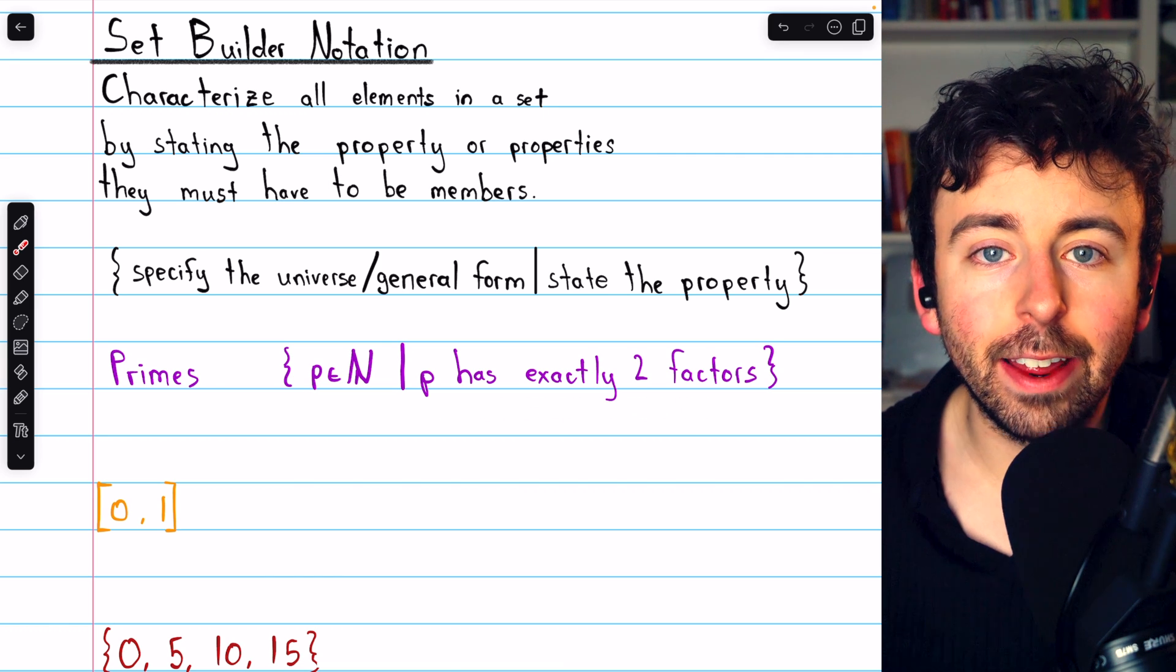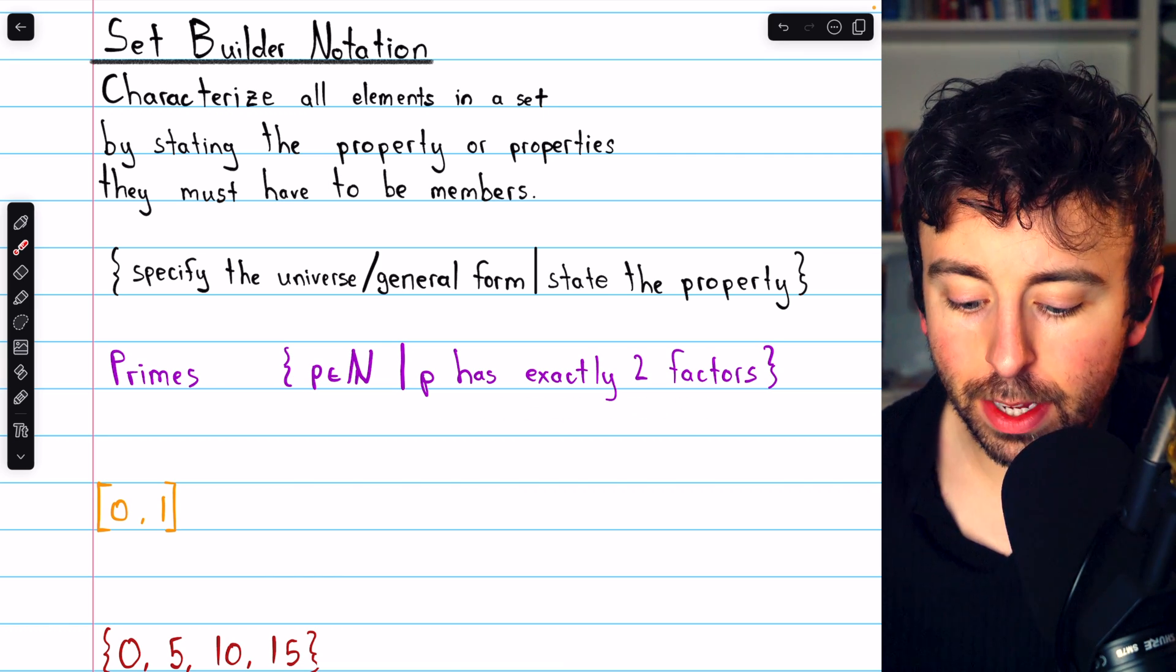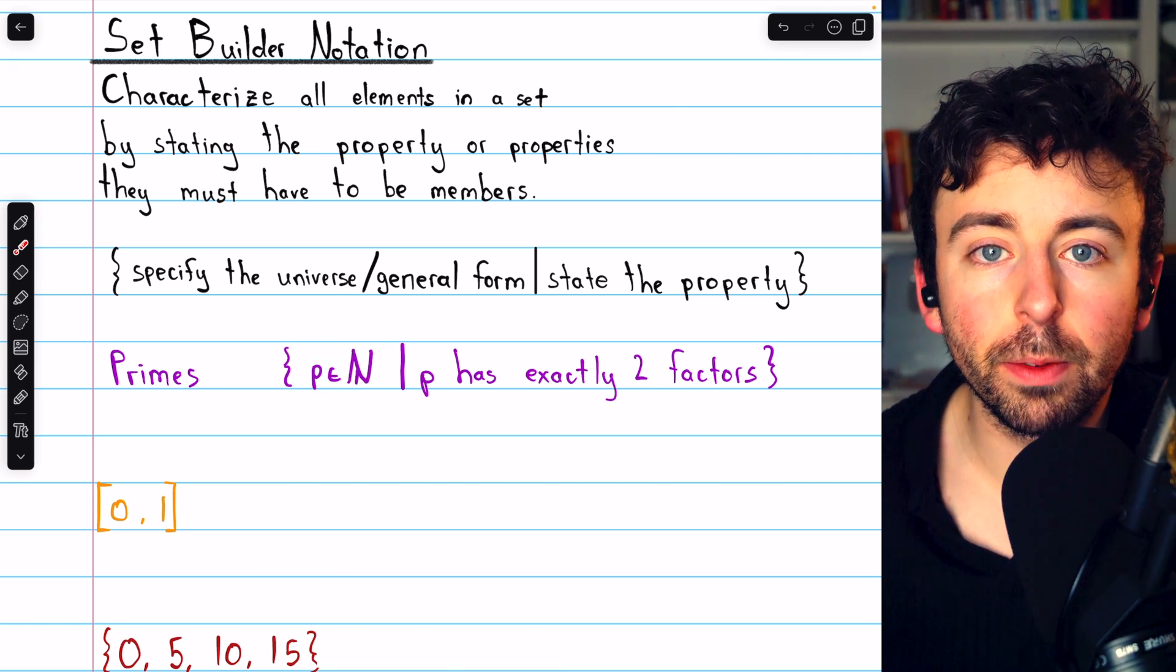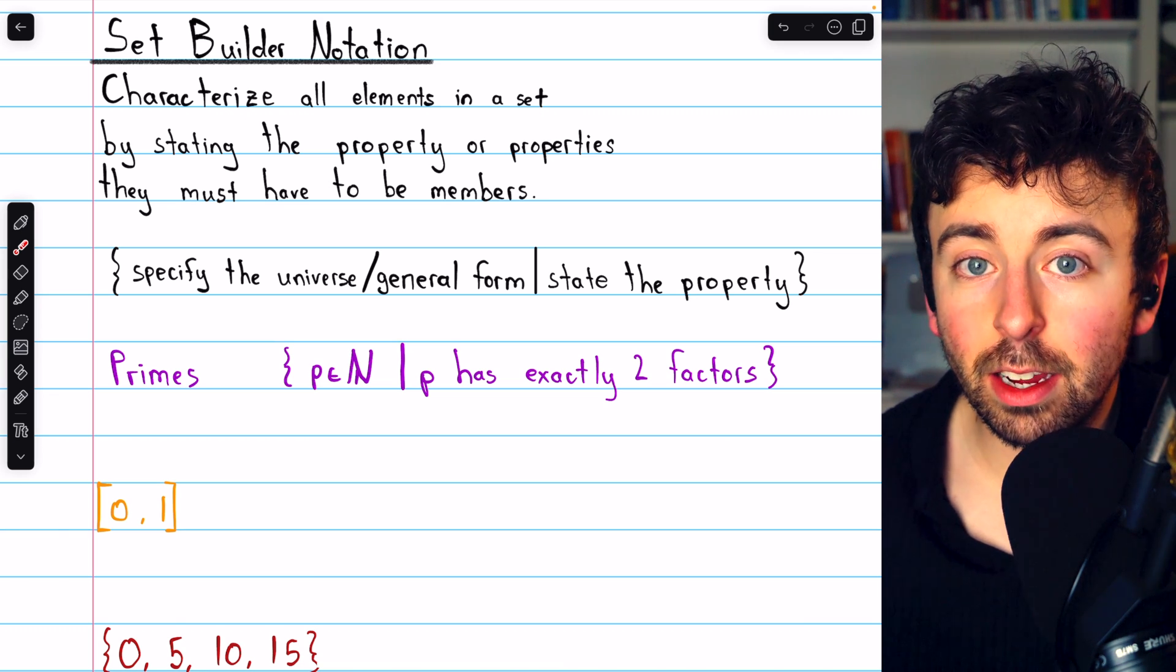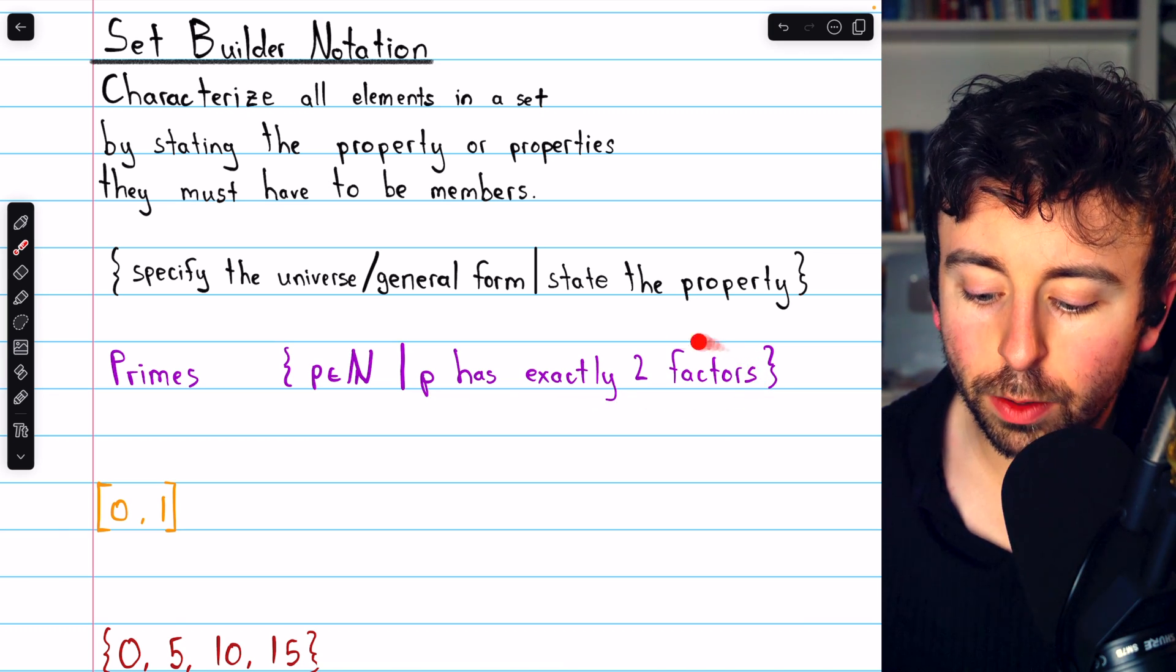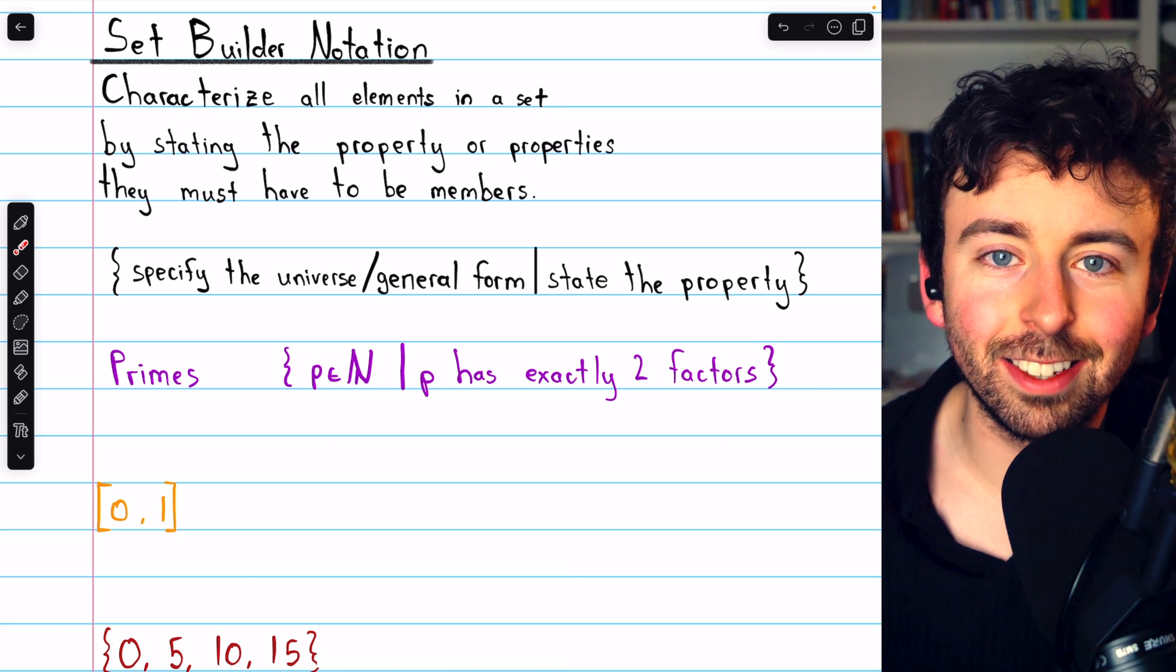This set doesn't contain negative 1, for example, because negative 1 is not a natural number. This set doesn't contain 6, for example, because 6 has four factors, which is not exactly 2.